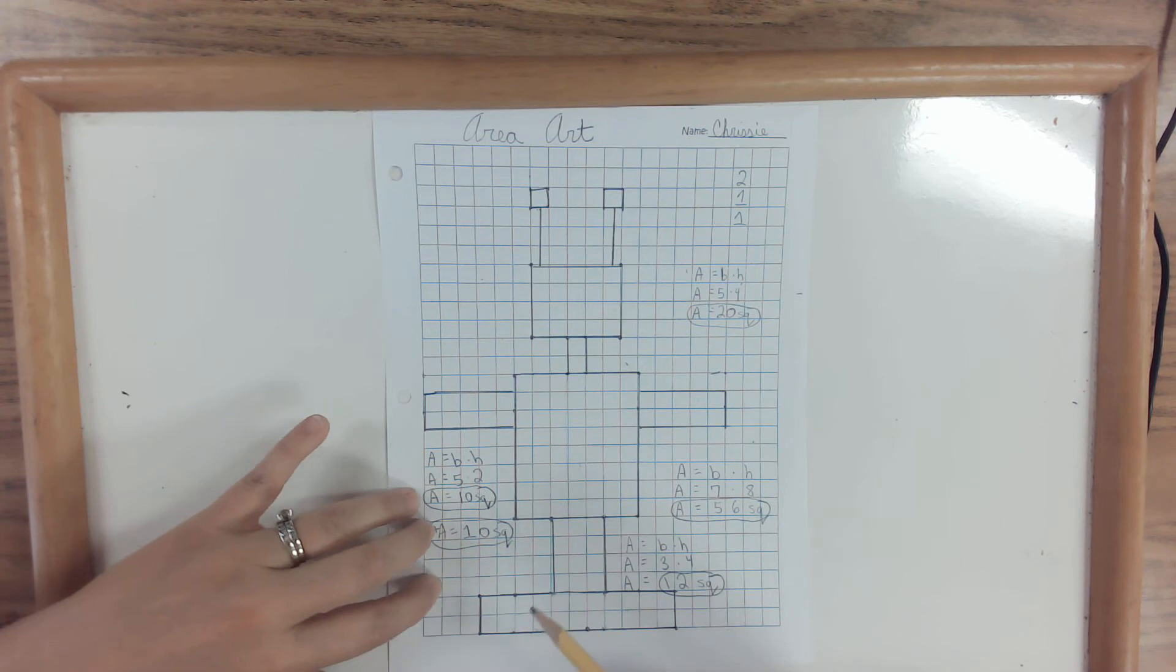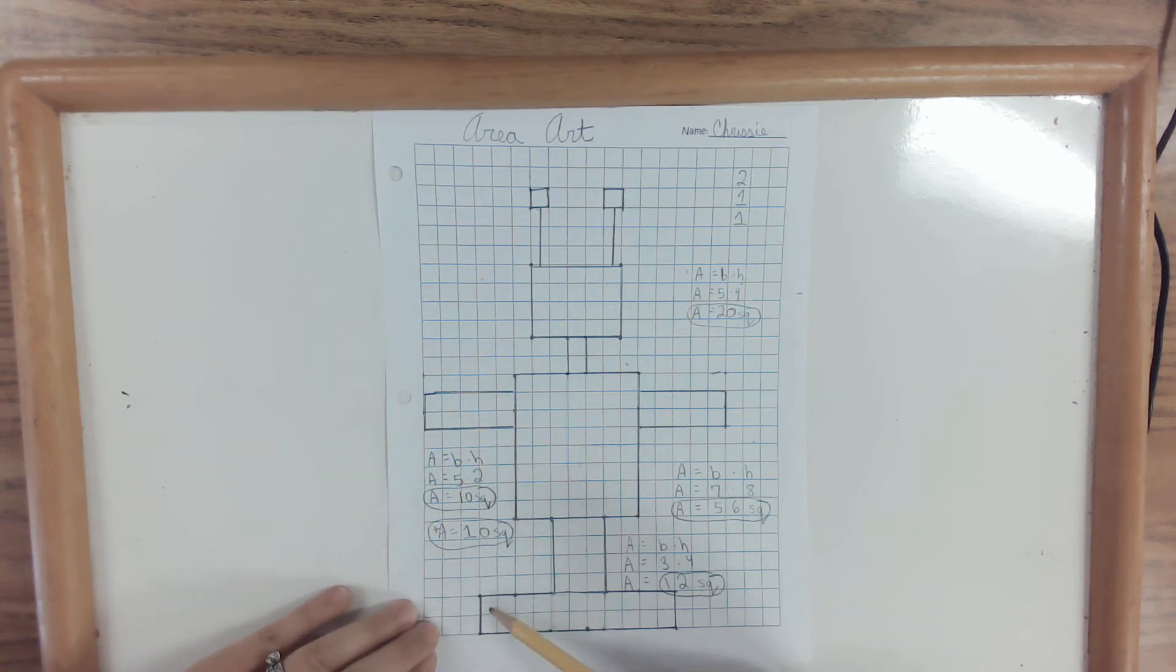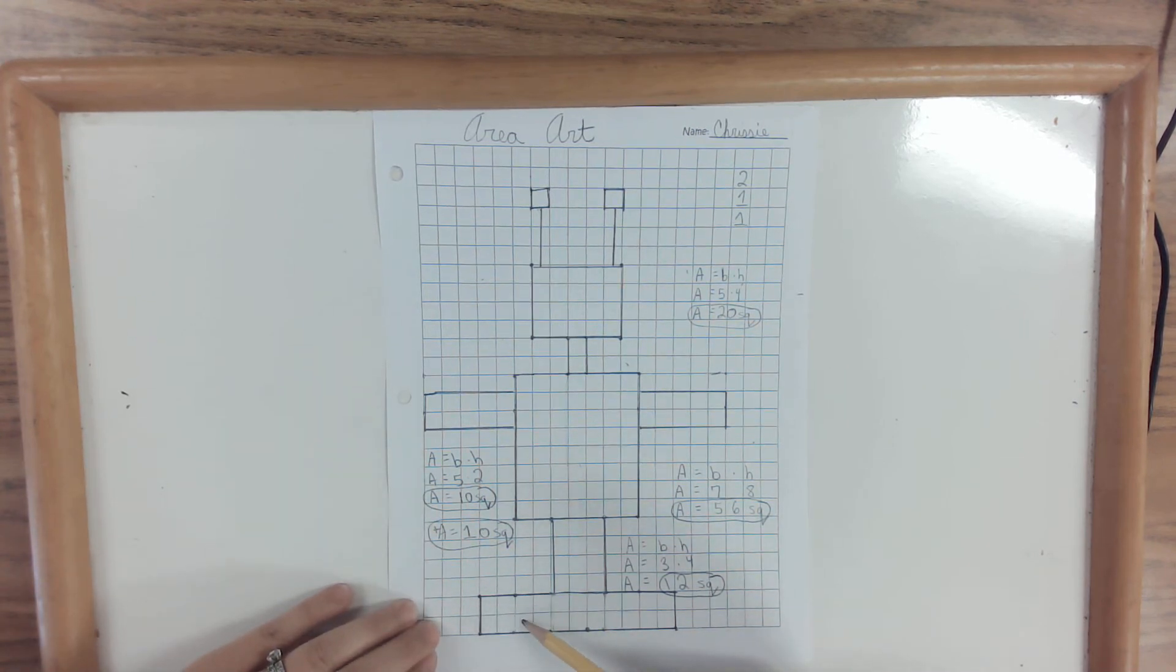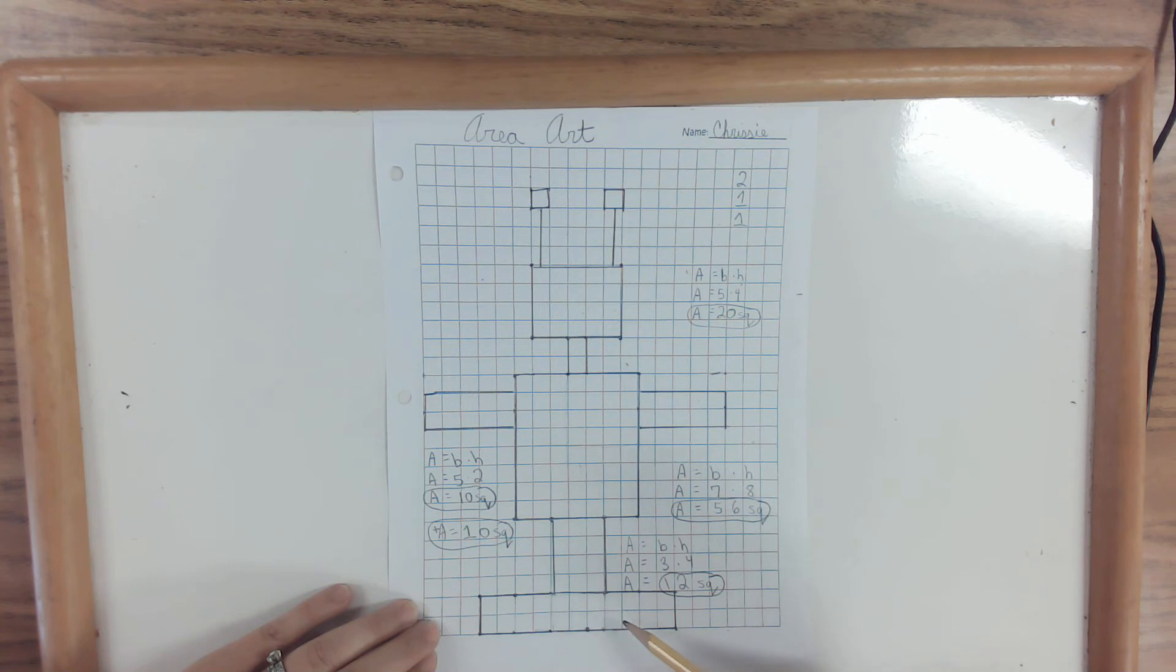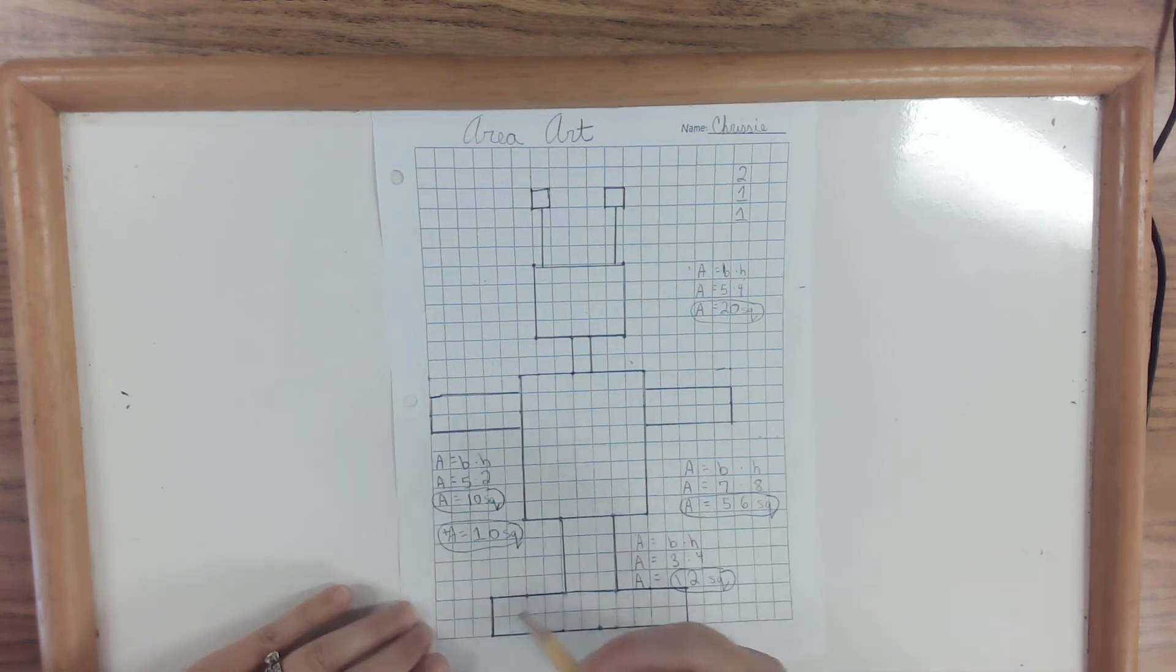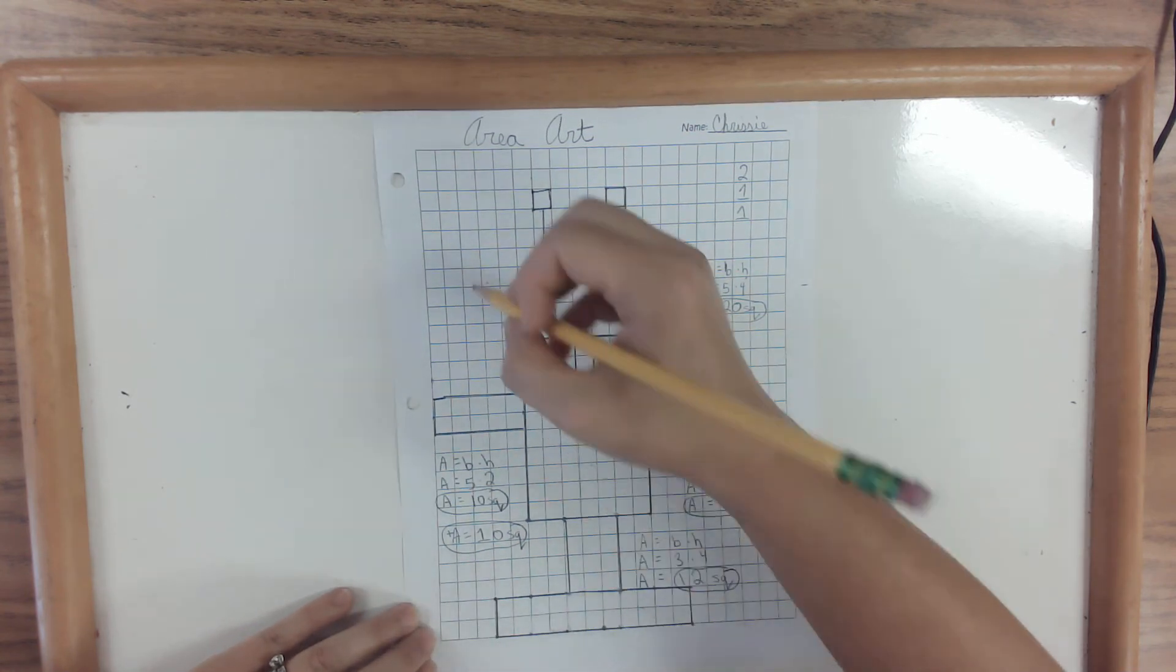That's twelve squares. And my last one is this guy. It's really quite long. So a height of two. One, two, three, four, five, six, seven, eight, nine, ten, eleven. I'll put that one up here.